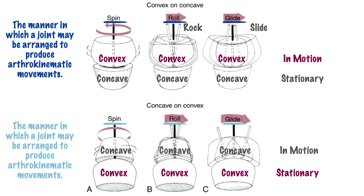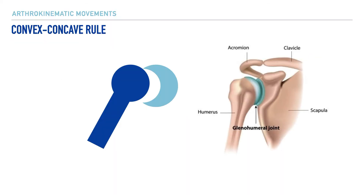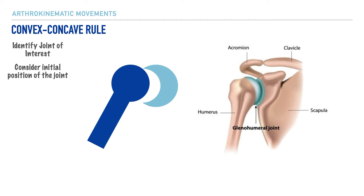The content we just reviewed can be summarized into two rules. The first is the convex-concave rule. This begins with identifying a given joint, so for this example let's select the glenohumeral joint, more commonly referred to as the shoulder joint, pictured on the right side of your screen. Next, we need to identify the initial or start position of that joint — let's consider someone in a standing position with their right shoulder presented as shown.